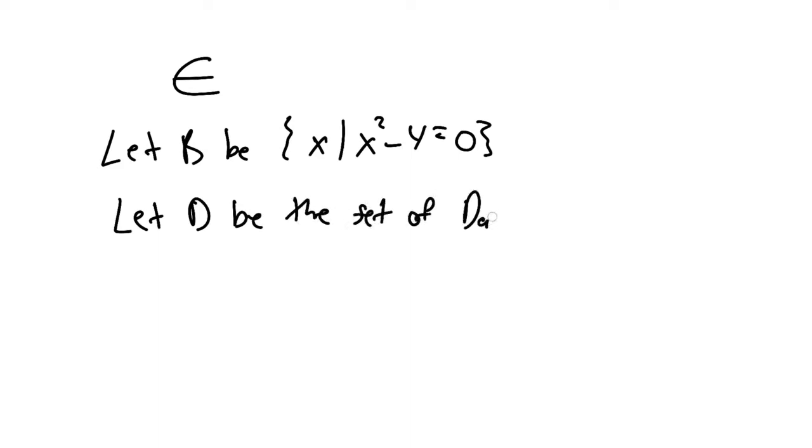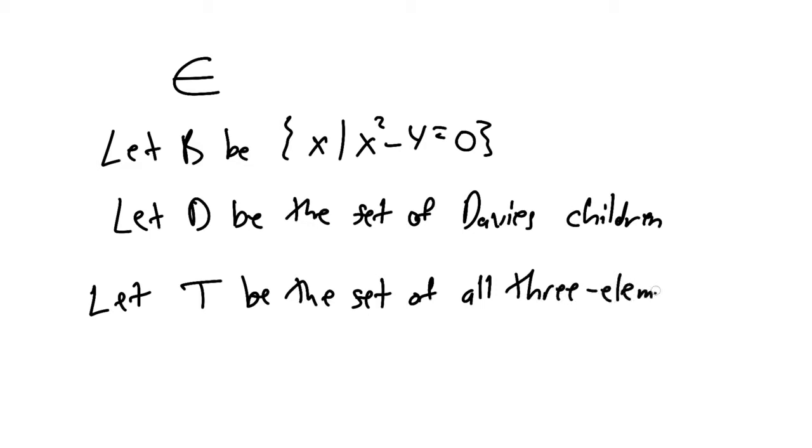Let's make a couple sets here as an example. We'll go back to one of our old friends. Let B be {x | x² - 4 = 0}. Let D be the set of Davies kids. And let T be the set—I'm going to go meta on you here—of all three-element sets.